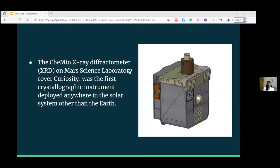This is the CheMin X-ray diffractometer on Mars Science Laboratory rover Curiosity, the first crystallographic instrument deployed anywhere in the solar system other than Earth. Engineers were able to shrink the size of a refrigerator to the size of a shoebox and make it less power hungry, allowing it to be packed and sent to Mars on the rover.